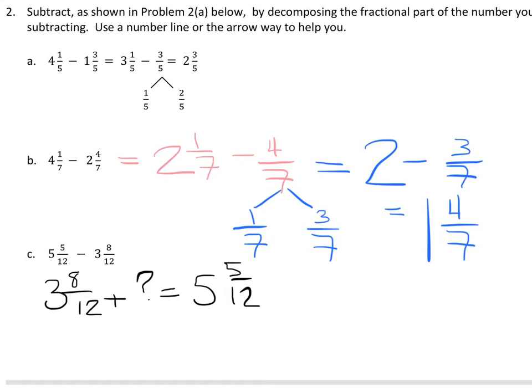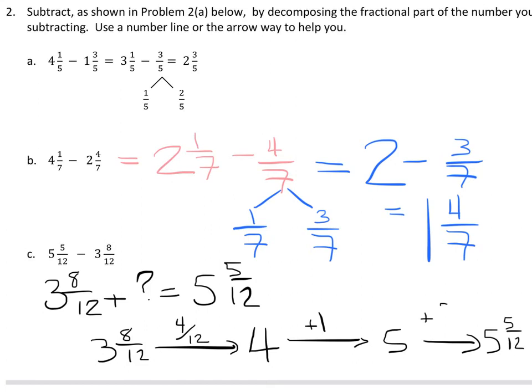So, I'll start at 3 and 8 twelfths. And I'm going to add 4 more twelfths. Now, why would I do that? Doesn't that get me to 12 twelfths, which now gets me to 4. And then I want to get to 5. So, I'm going to add another whole. And then I want to get to 5 and 5 twelfths. So, to get to there, I'm going to need 5 more twelfths.